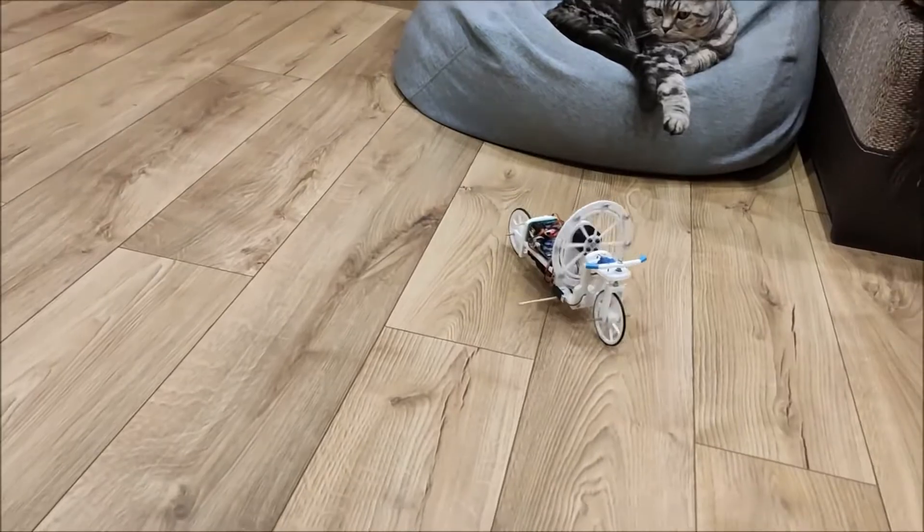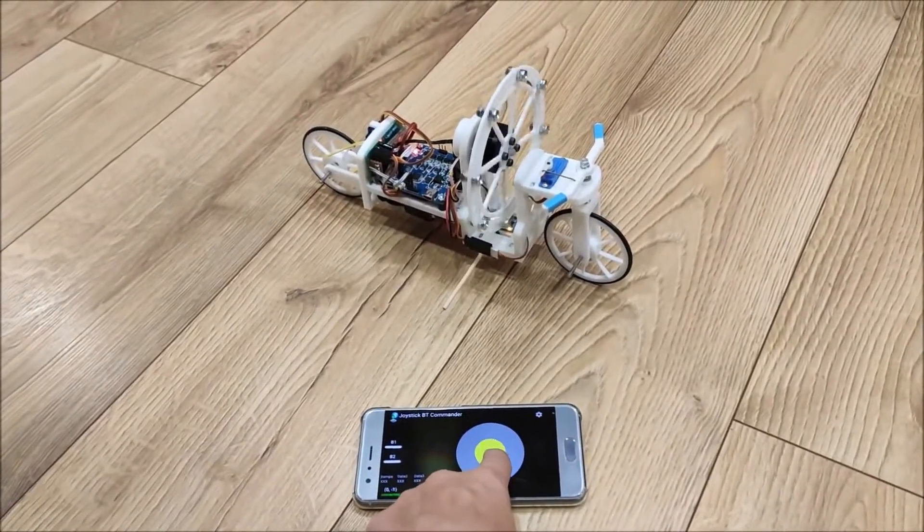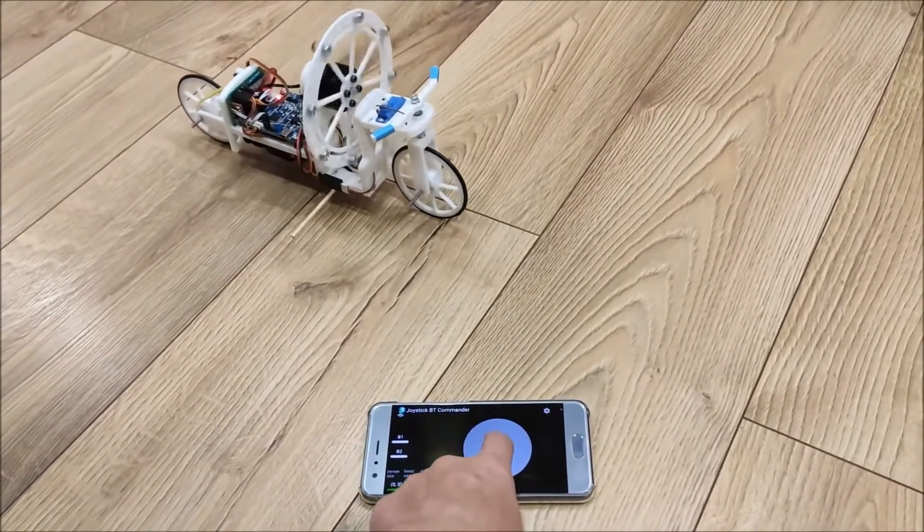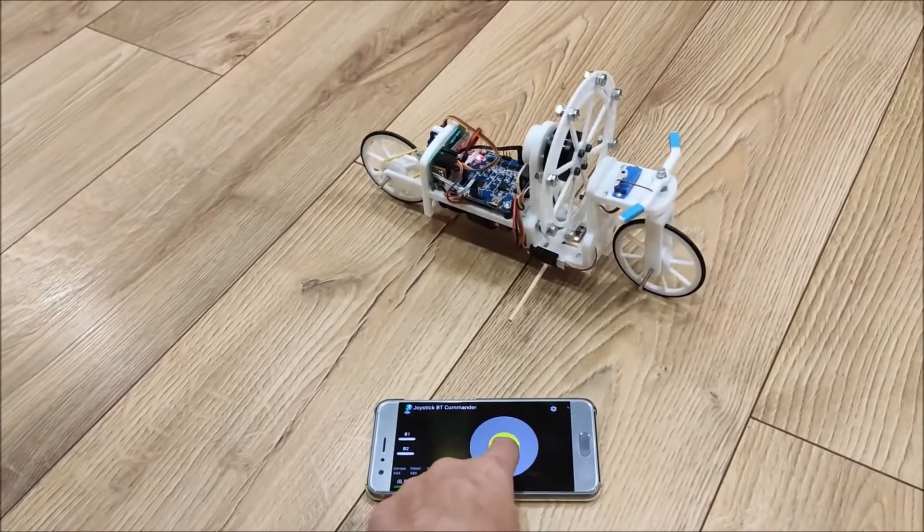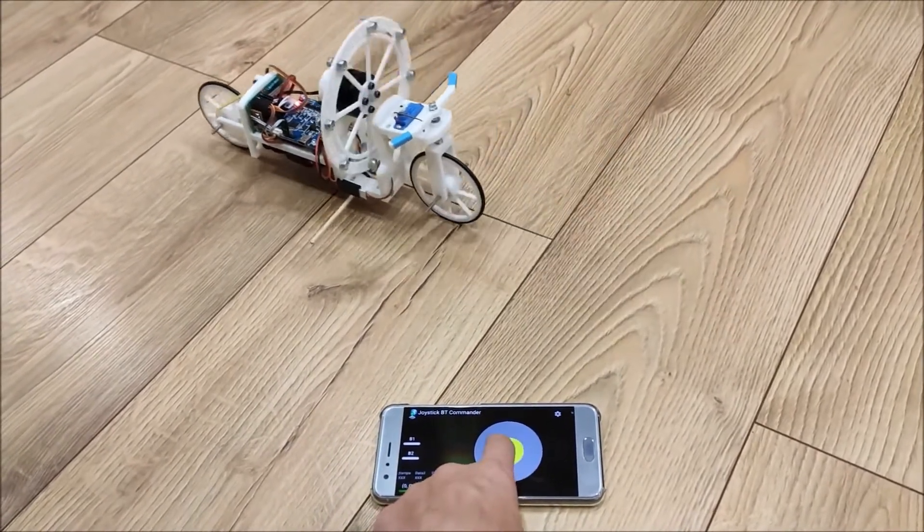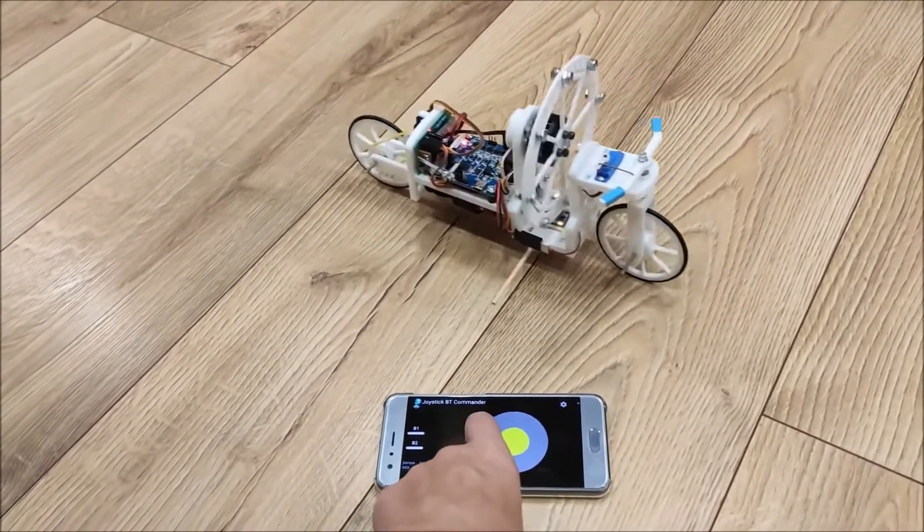The torque wheel in our miniature bicycle will provide the necessary angular momentum to keep the bike balanced, enabling it to stay upright and move forward without the need for training wheels or other forms of support.